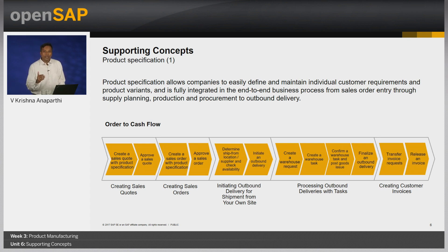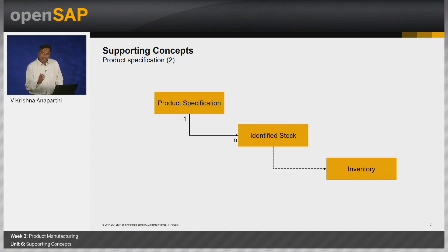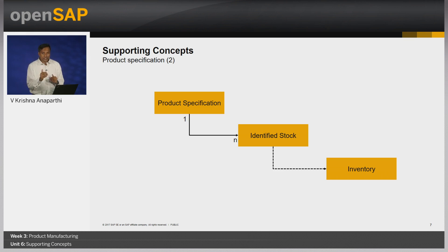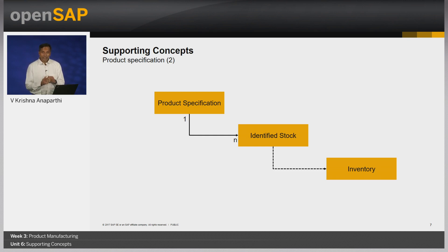Users can also create product specification-specific production master data elements, namely production bill of material and production model. When stock is being built specifically to a product specification, such stock can be linked to the product specification only via identified stock. At an identified stock level, the user can maintain the product specification. A product specification can be assigned to multiple identified stocks, but for a particular identified stock, only one product specification can be assigned.